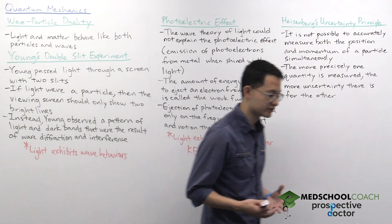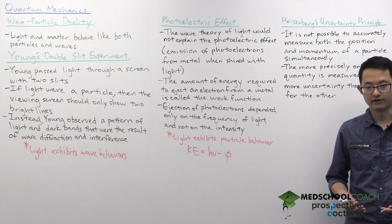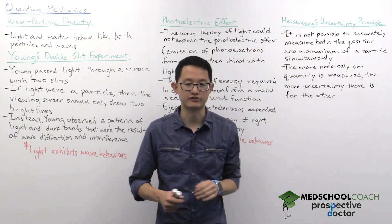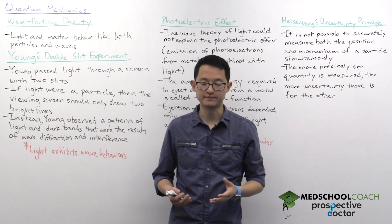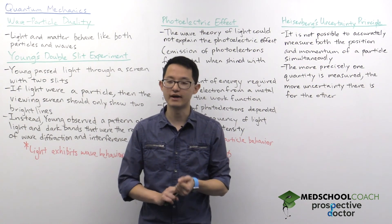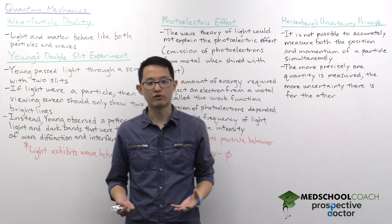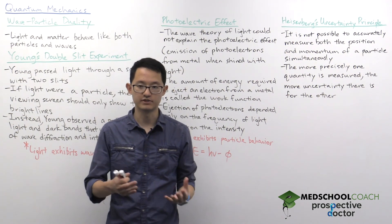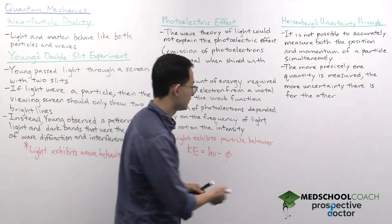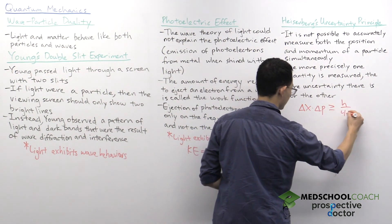So put together, from these two experiments we can understand why light exhibits both wave and particle behavior. Now let's take a look at the uncertainty principle, often called Heisenberg's uncertainty principle, for the scientist who came up with this theory. It states that it is not possible to simultaneously measure the position and momentum of a particle to exact precision at the same time. In other words, the more precisely you measure one of these two quantities — position or momentum — the less precisely you can measure the other.